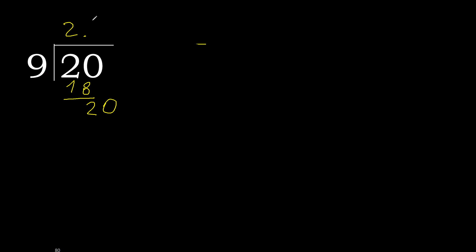20 again: 9 multiplied by 2, subtract, complete. 9 multiplied by 2 is 18, subtract, complete.